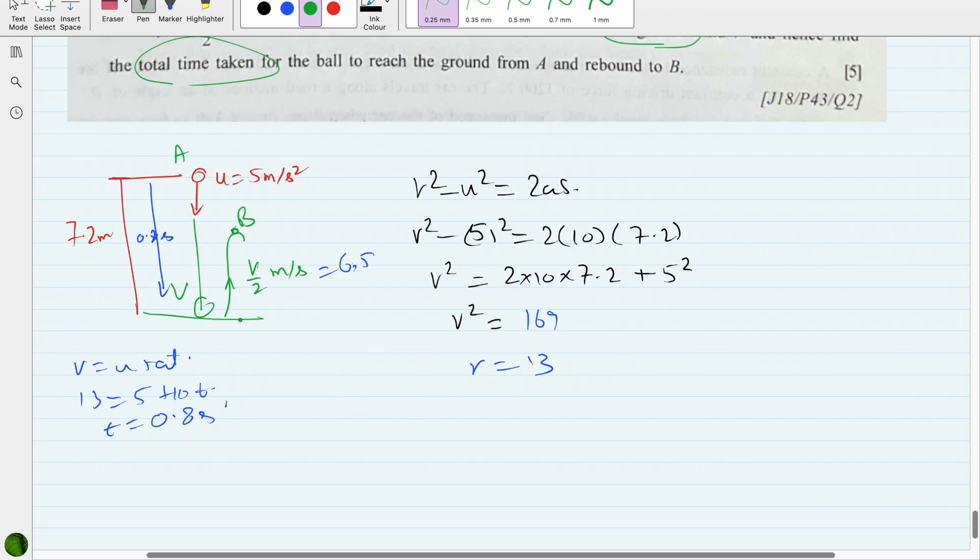Now for the second half, it reaches a maximum height and we know the initial speed now is 6.5. When it reaches the maximum height, velocity at that point would be 0.